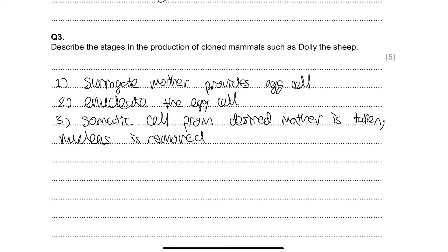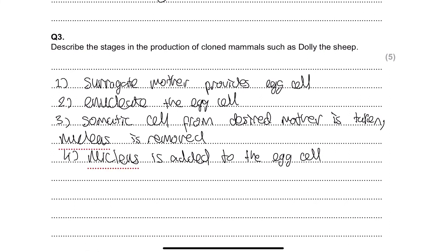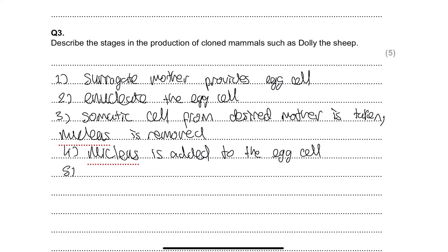The nucleus of the somatic cell is added to the enucleated egg cell. Now, this fusion can't happen naturally, so we need to stimulate it — and the way we do that is via electric shock. The electric shock allows the nucleus to be accepted by the egg cell and to carry out the processes it needs to perform inside that cell.